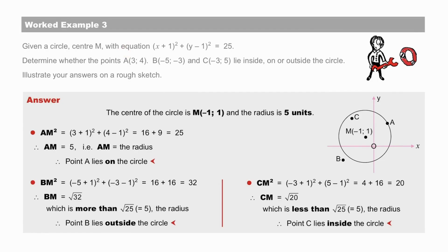To determine whether the points A, B and C lie inside, on or outside the circle, we find the distance between the point and the center M and compare it to the radius. The center M is the point minus 1, 1, from the standard form here. And the radius is equal to 5 units from the r-squared value there of 25.